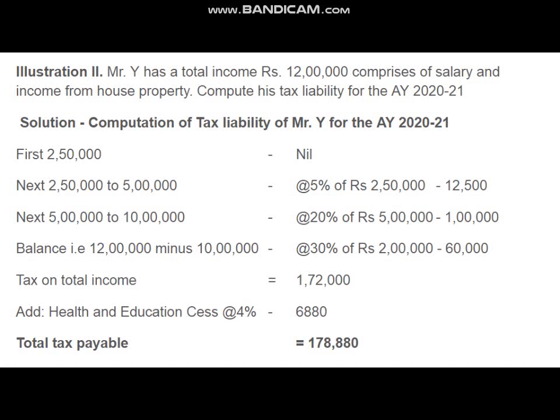Please understand that here we have applied the rate of tax applicable for other individuals. There are three types of individuals for income tax purposes: senior citizens, super senior citizens, and other individuals. Since the age of the assessee is not given, we assumed he belongs to the other group, and the default tax slab applicable for individuals is taken into consideration. Based on that we have solved this problem. Thank you for watching, have a nice day.